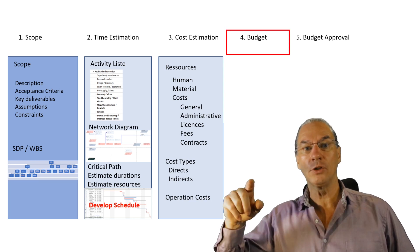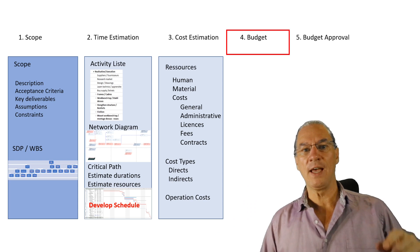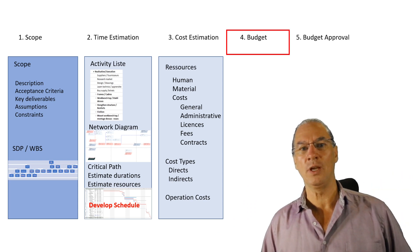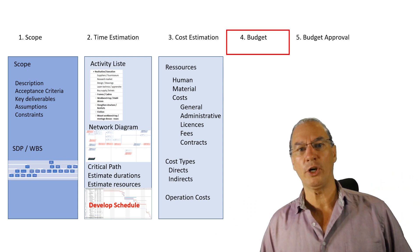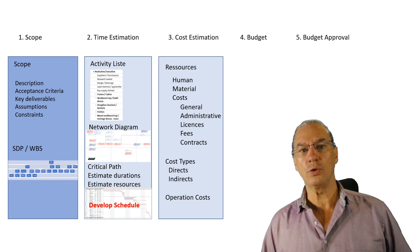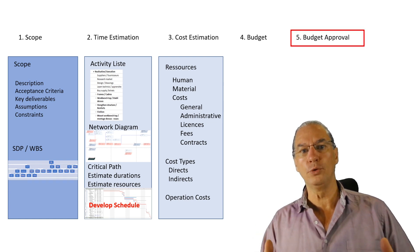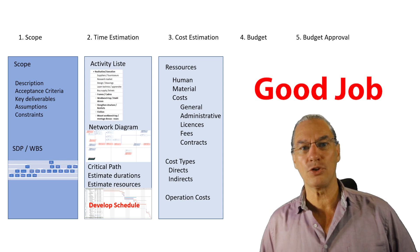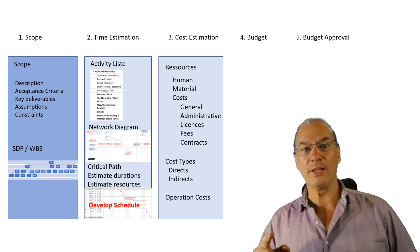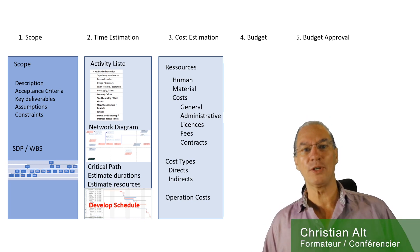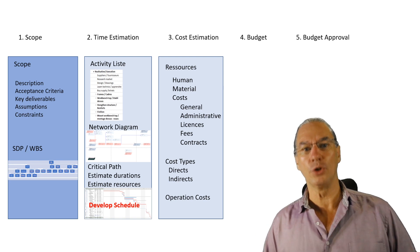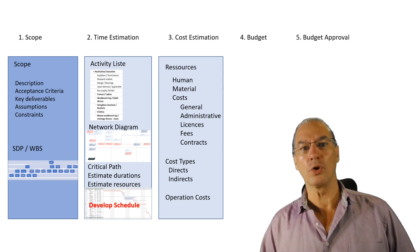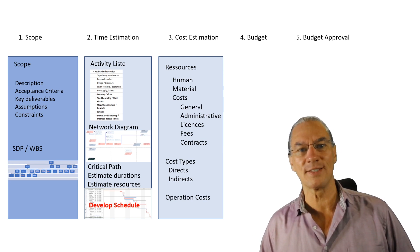Once we have the costs and the time estimation, we can prepare a budget. With the budget, we can propose it and have it approved. You are a happy project manager — your budget was approved. I'm Christian from Vision6D, and we are going to look now in more detail at how to do this.